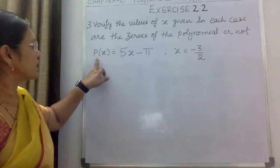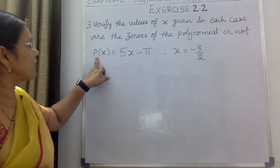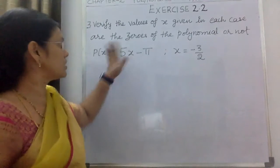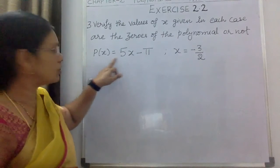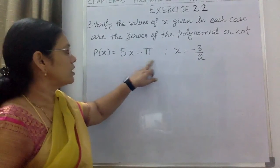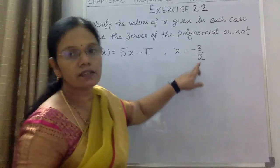Okay, let us take another example and verify the value given here is zero of the polynomial or not. The given expression is P(x) = 5x - π, where x = -3/2.